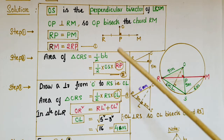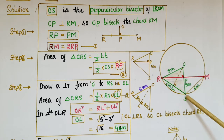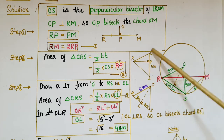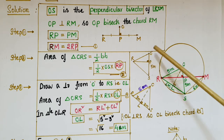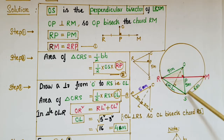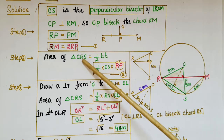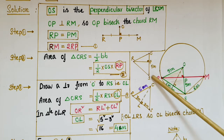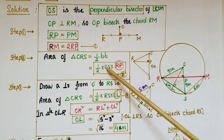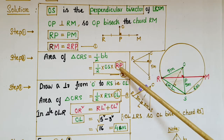Now we have to find the value of RP. Take triangle ORS — in triangle ORS, RP is the height or altitude of the triangle and OS is the base. OS is the radius of the circle, that is 5 meters. So the area of triangle ORS equals one-half into OS into RP. This is equation 2.